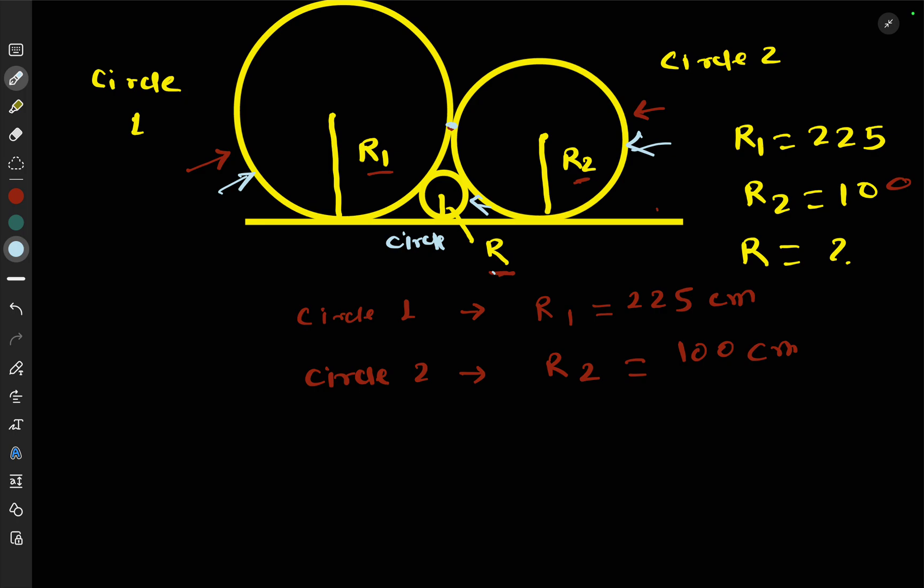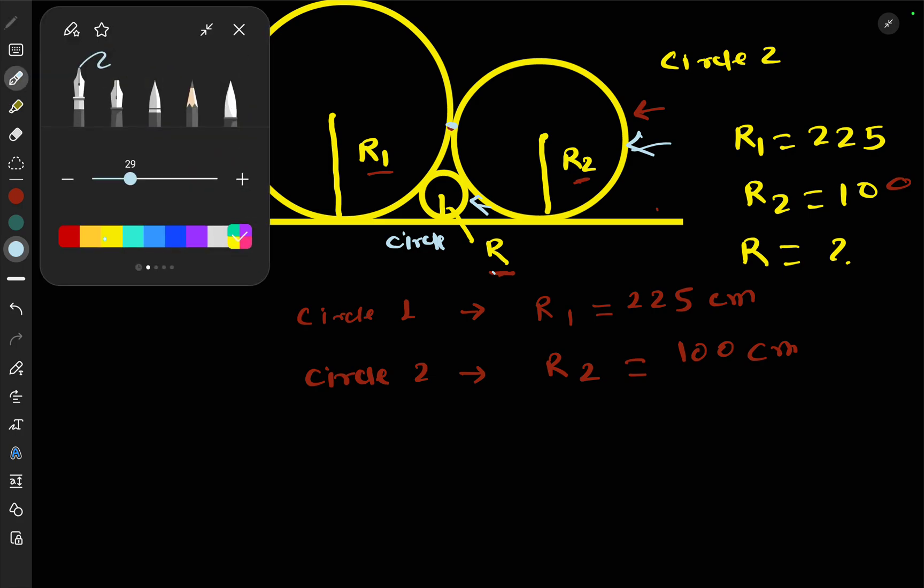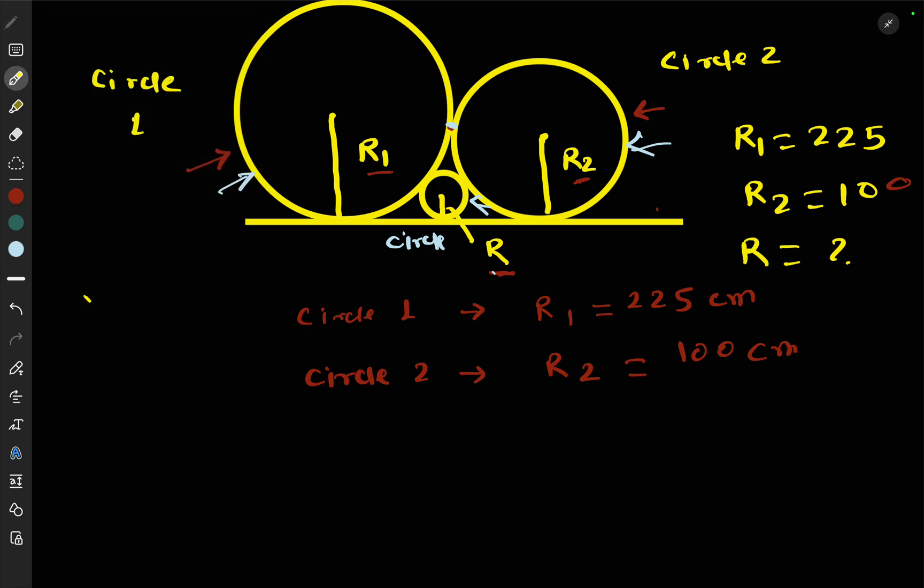I'll just give you the formula used to find the radius of the smaller circle. For this case, if R is the smaller circle's radius, then 1/√R equals 1/√R1, where R1 is the radius of the bigger Circle 1.